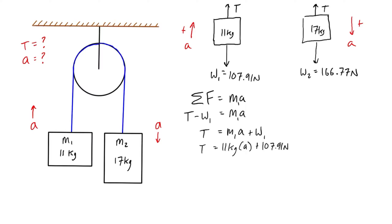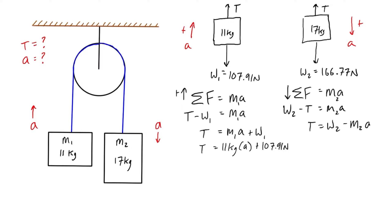For mass 2, the positive direction is downward, matching its acceleration. Applying Newton's second law: W2 is positive and tension is negative (opposing the positive direction): W2 − T = m2·a. Isolating for T gives T = W2 − m2·a, or T = 166.77 − 17a newtons.